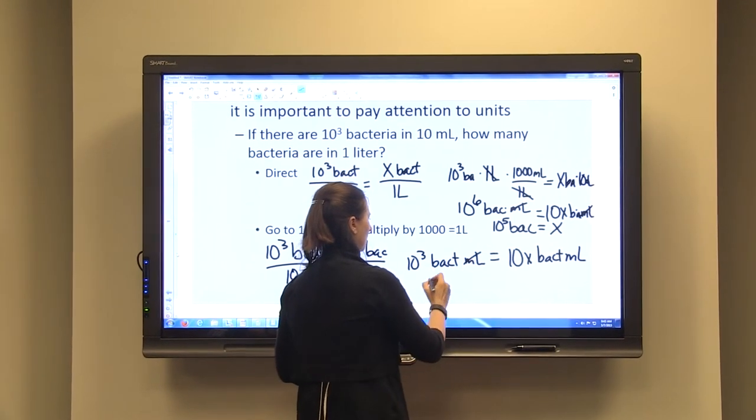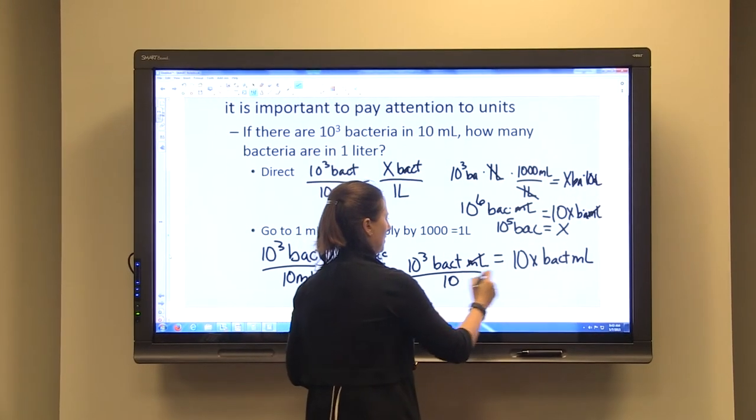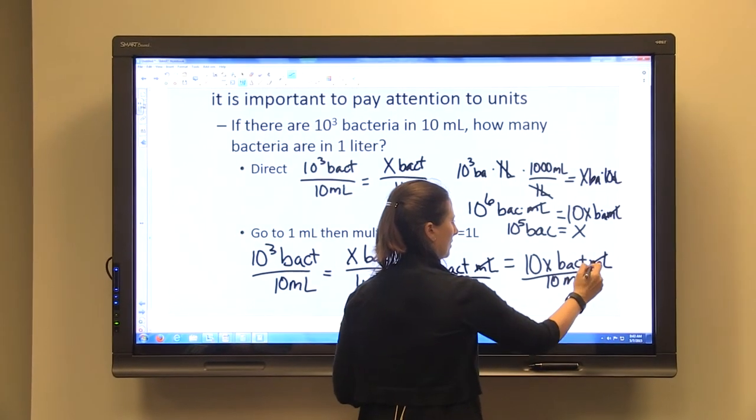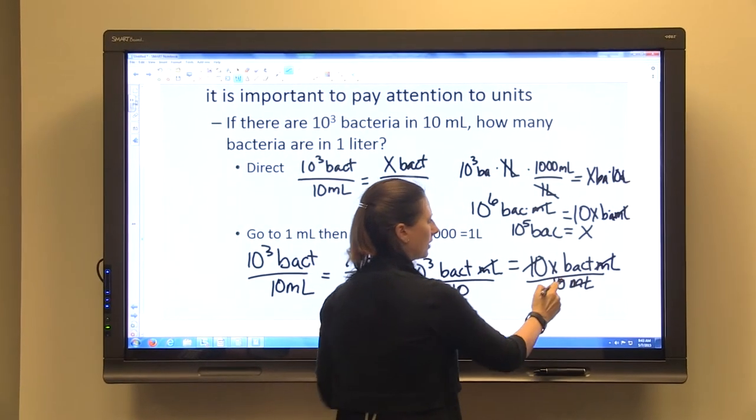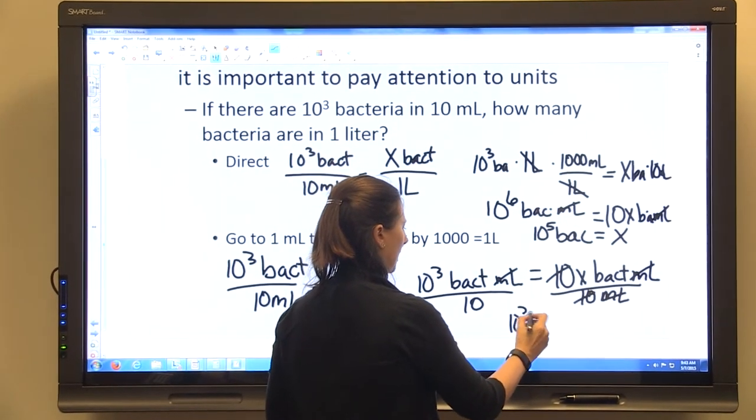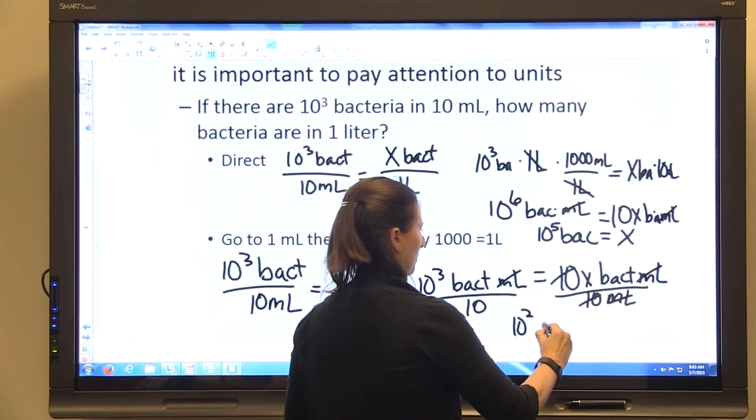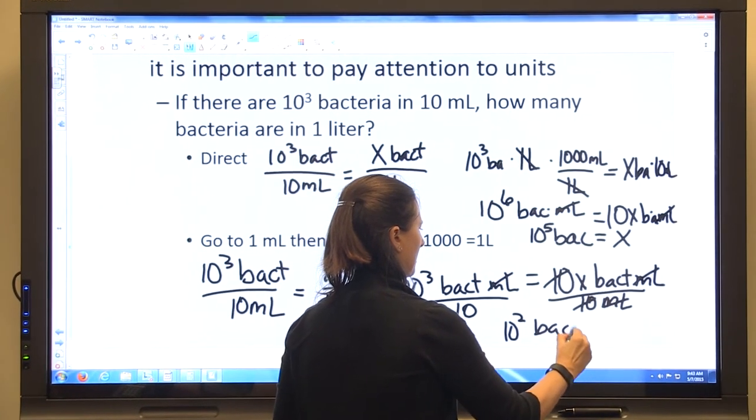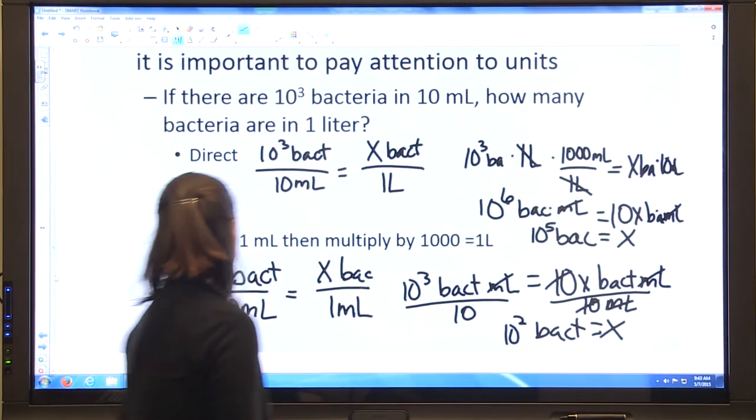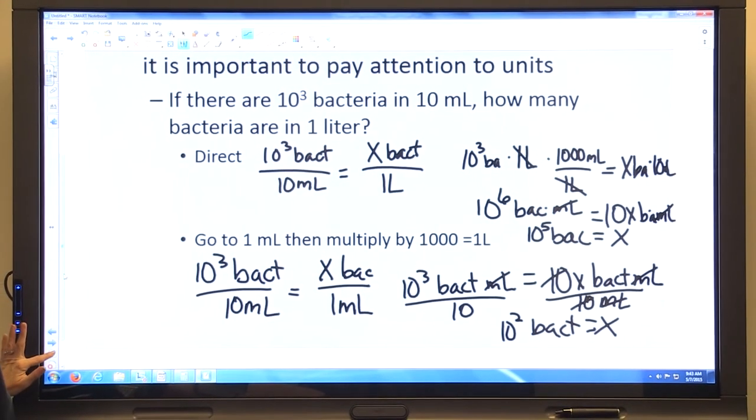We divide by the 10 mL, and so that'll get rid of that. I'll show you here that I am doing this so that we are left with X bacteria. 10² bacteria equals X.